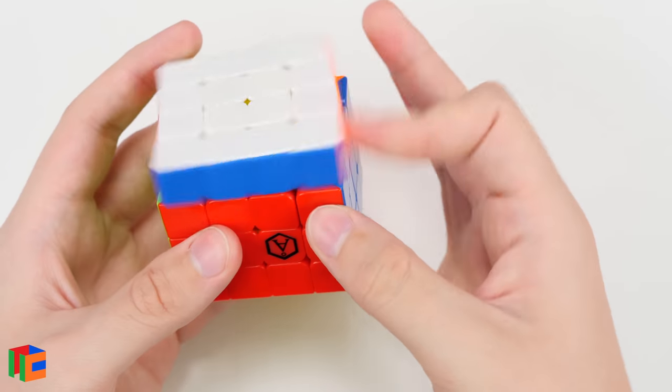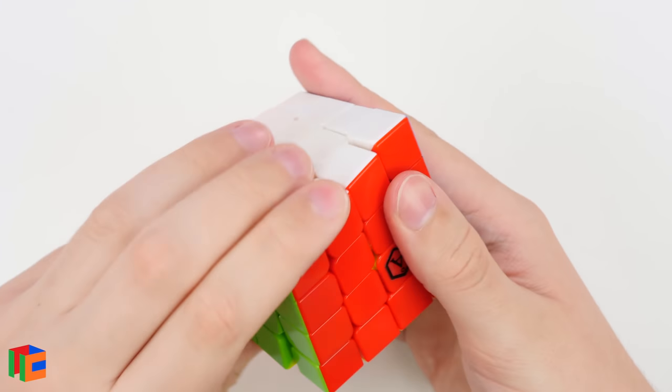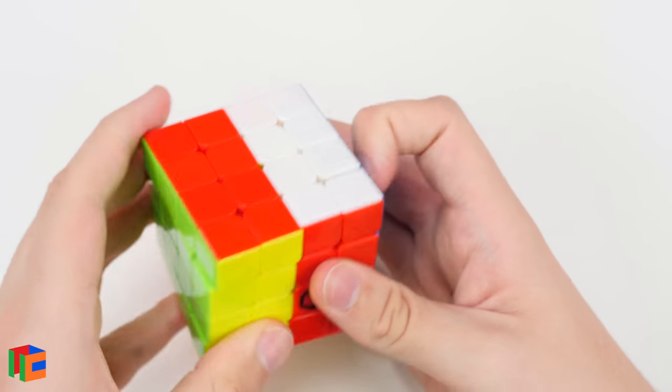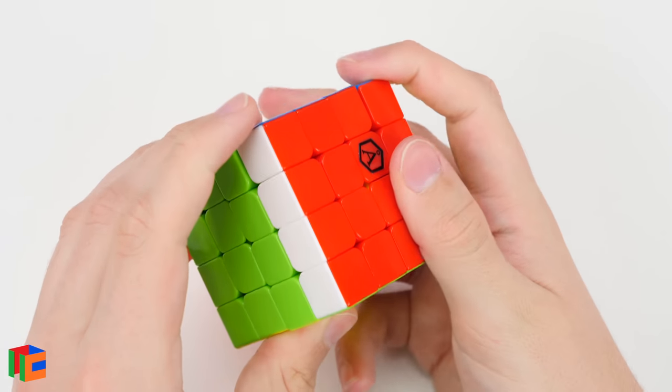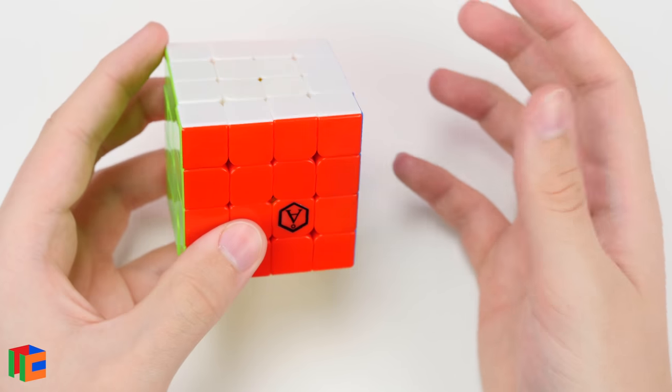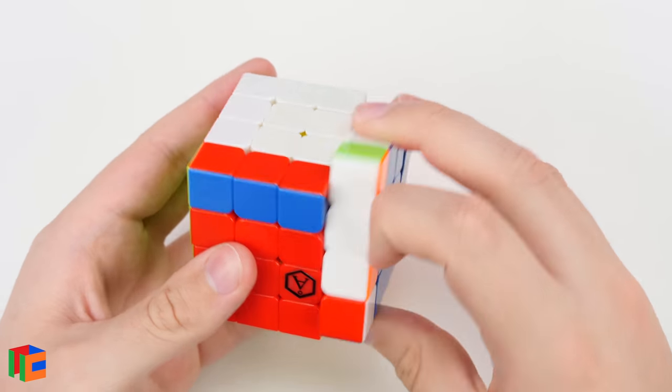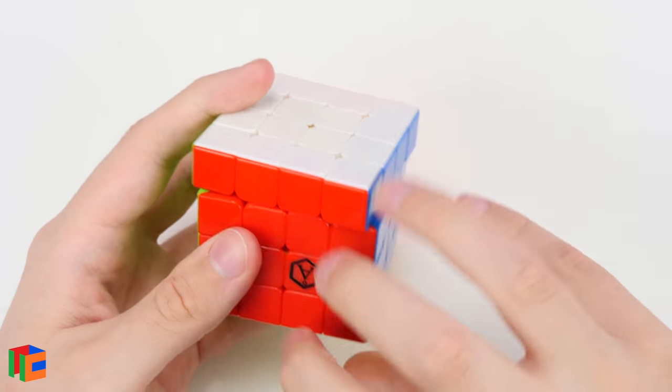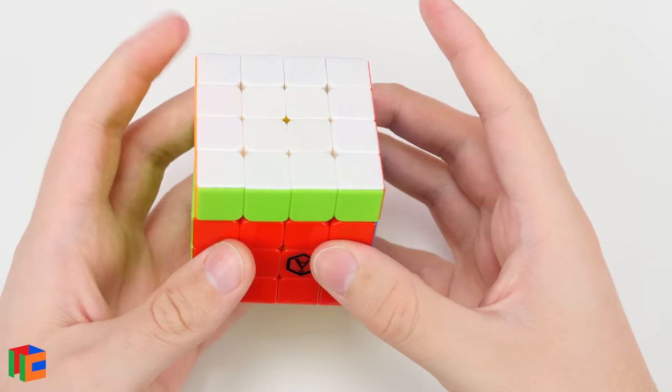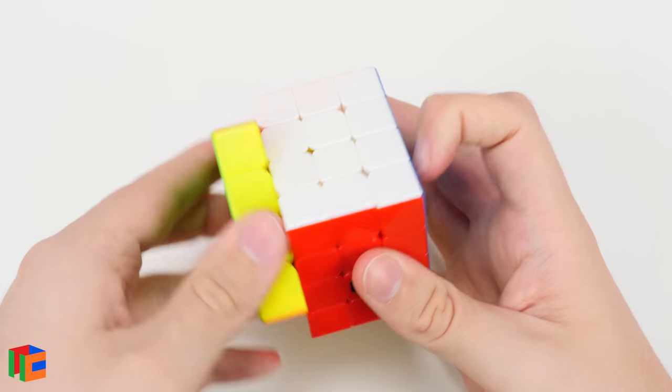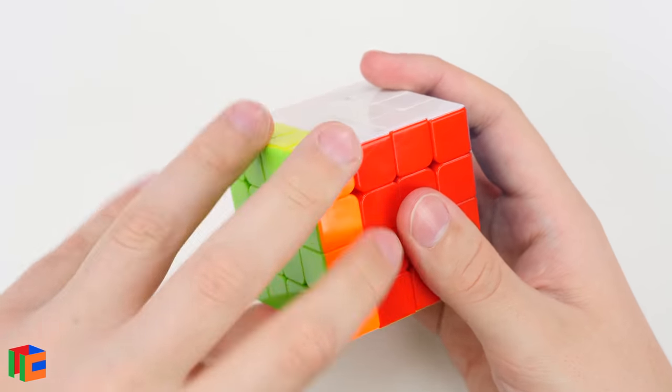It feels just ever so slightly sandy. It still has that new cube feel. I'm sure it'll change as time goes on. But it does have that classic Angstrom feel. It doesn't feel gummy and it doesn't feel draggy, like the pieces are dragging over each other. It just feels smooth.